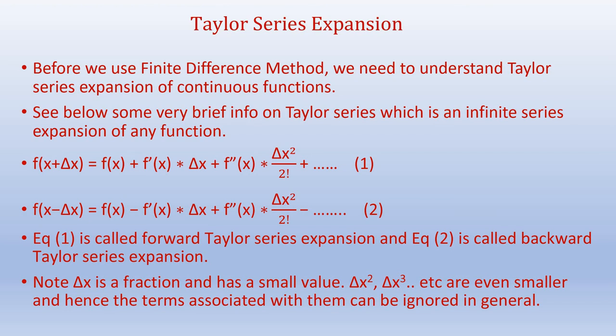Likewise, we can write f(x − Δx) = f(x) − f'(x)·Δx + f''(x)·Δx²/2! and so on. Equation 1 is called the forward Taylor series expansion and is used for the explicit Euler method. Equation 2 is called the backward Taylor series expansion and can be used for the implicit Euler method. Note that Δx is a small fraction, so Δx², Δx³, and higher powers are even smaller and their associated terms can generally be ignored.